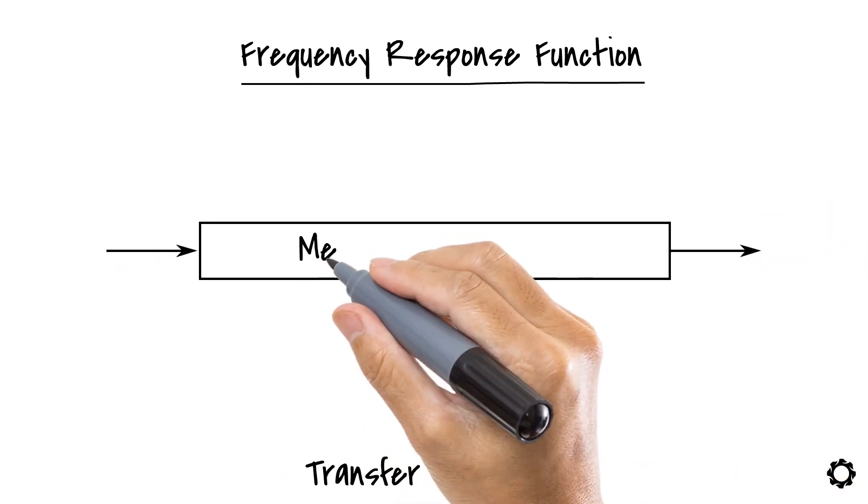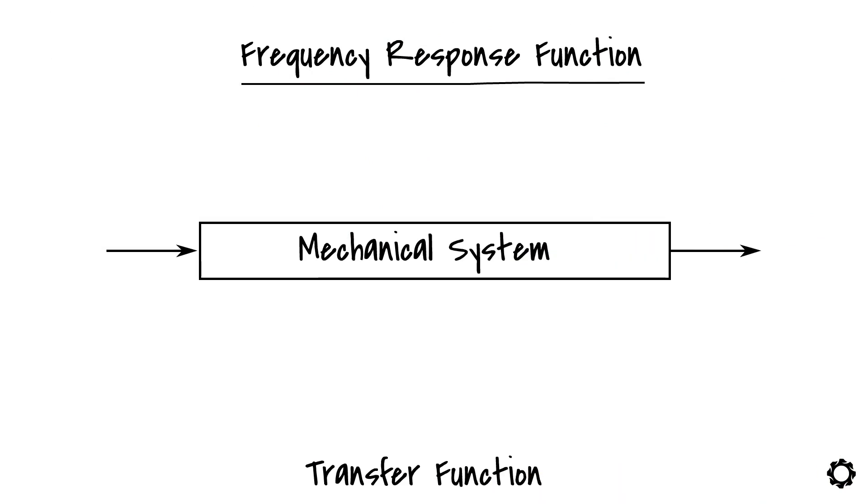In simple terms for a mechanical system the frequency response function is the ratio of the output response to the input force. That is the ratio of what is measured by the accelerometer to what is measured by the hammer.